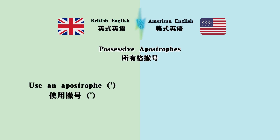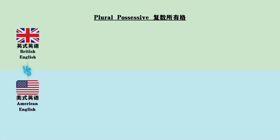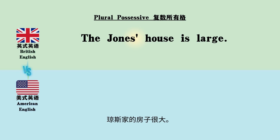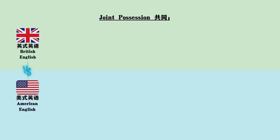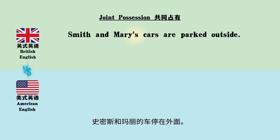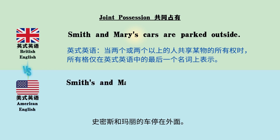Possessive apostrophes: use an apostrophe versus adding an apostrophe and S. Plural possessive: 'The Jones' house is large' versus 'The Jones's house is large.' Joint possession: 'Smith and Mary's cars are parked outside' versus 'Smith's and Mary's cars are parked outside.'